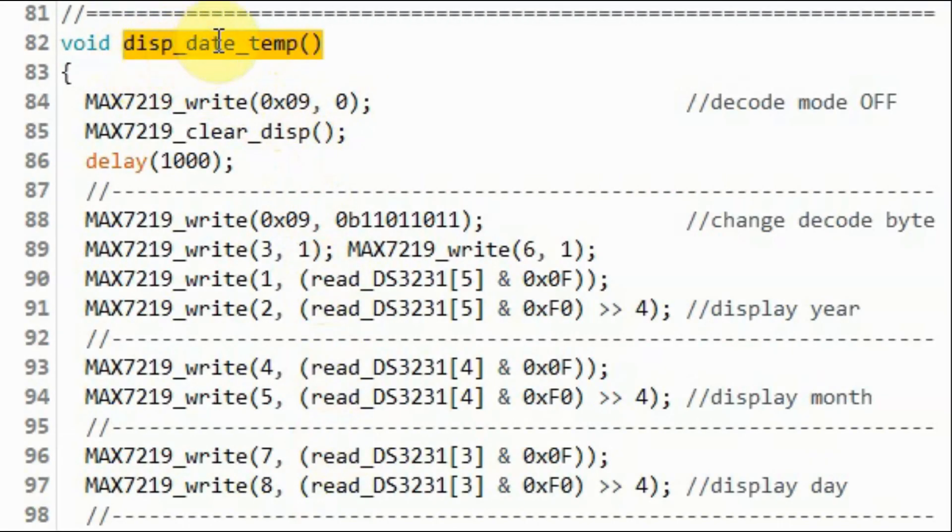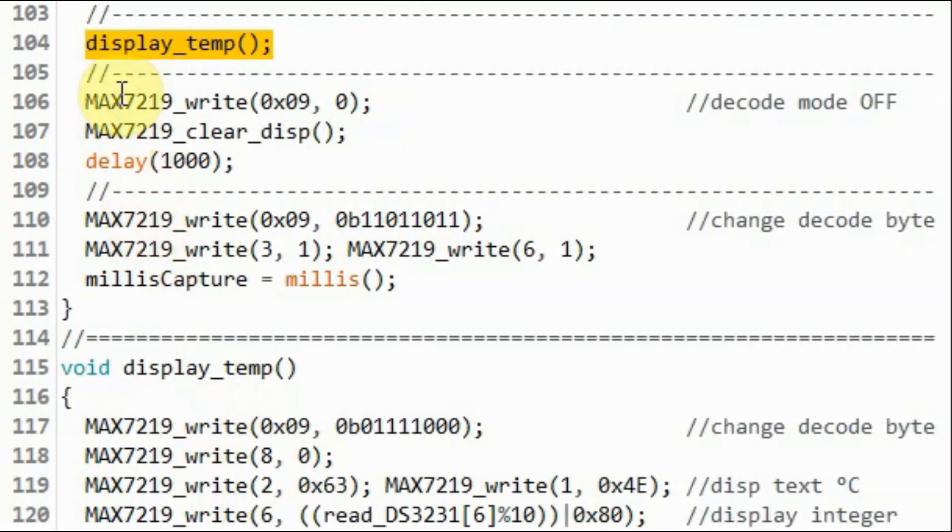Inside function display_date_temperature, we display the year, and then the month, and then the day on the MAX7019. Next, the program calls this function to display the temperature.